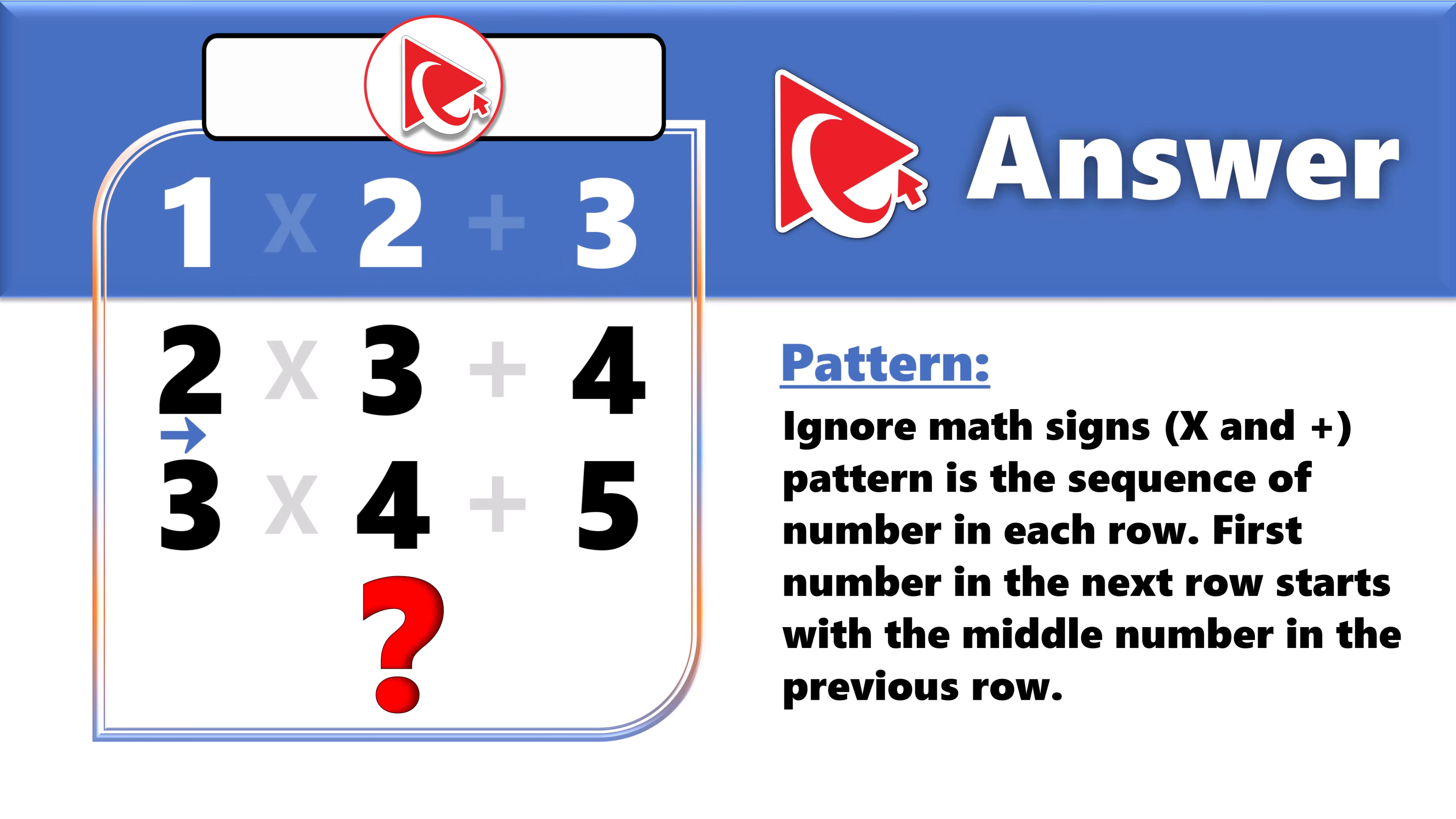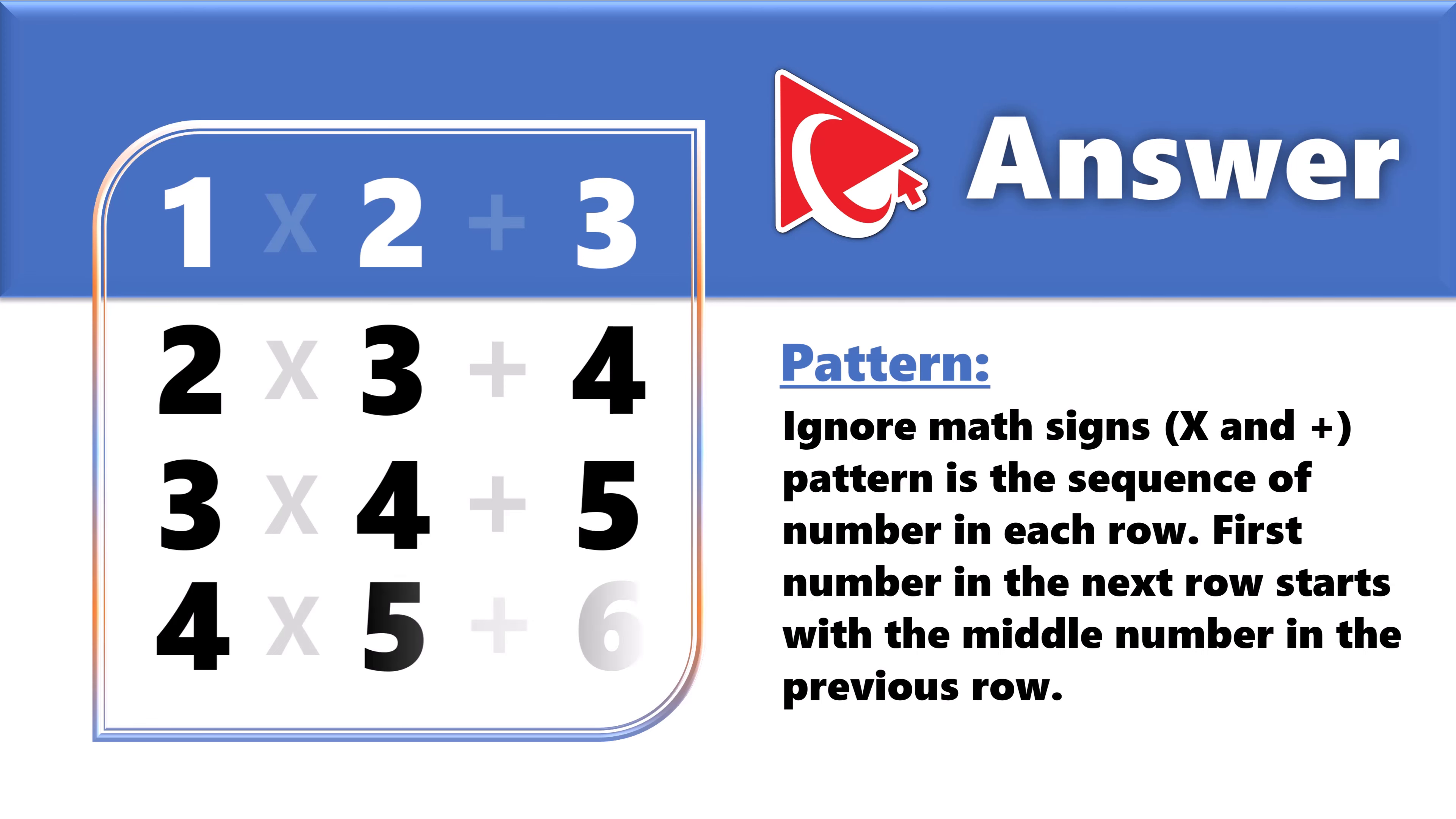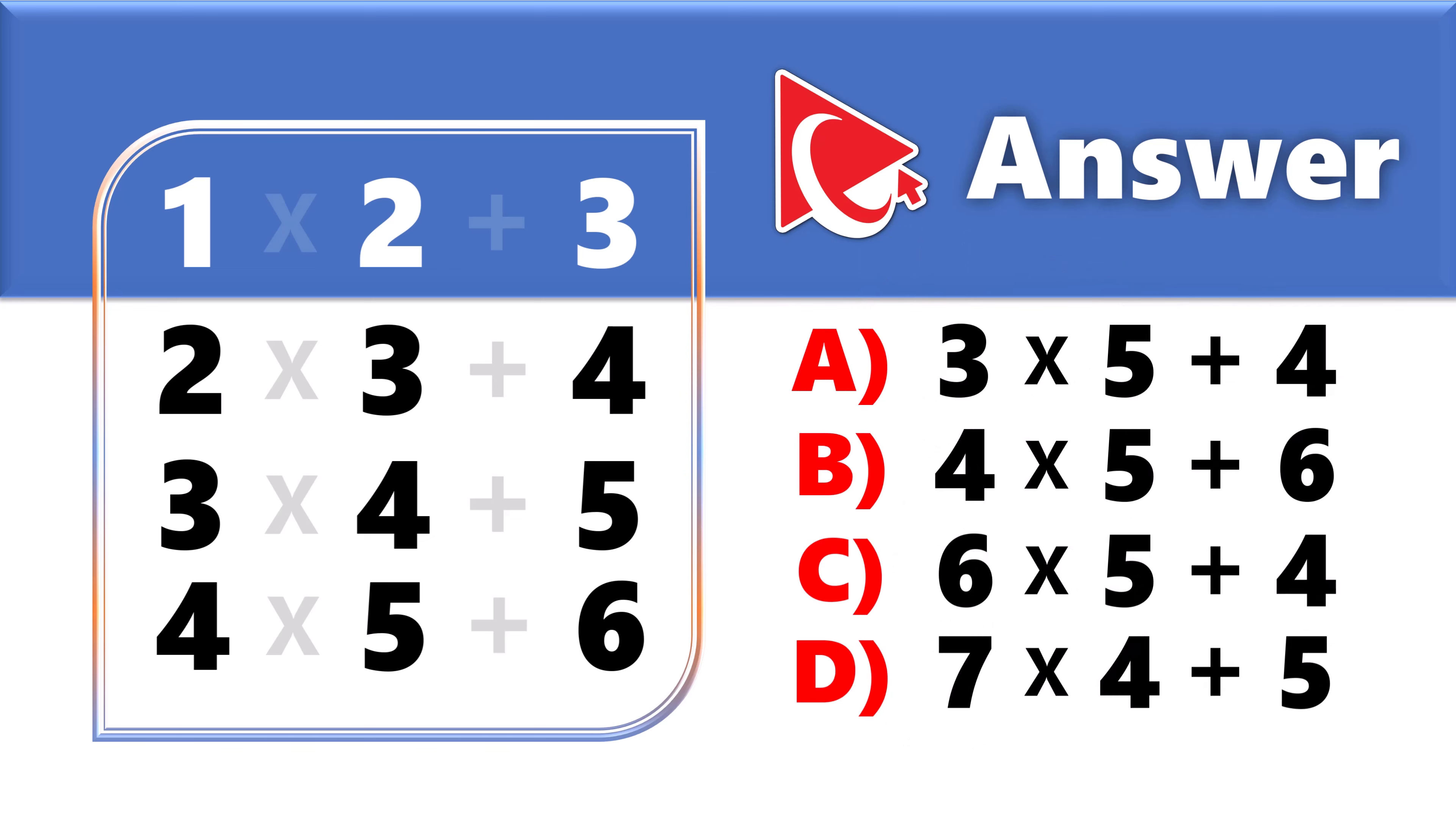In the second row, the numbers are 2, 3, and 4. In the third row, the numbers are 3, 4, and 5. So what we see is that the number in the next row starts with the middle number of the previous row. Which means that correct numbers for row 4 would be 4, 5, and 6. So the correct answer here is choice B, 4 by 5 plus 6.